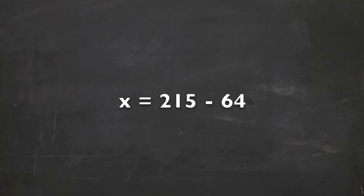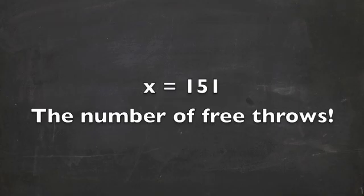After we have solved for y, we are allowed to plug it back into our previous equations. Solving for x, we plug in 215 minus 64, which gives us 151, the number of free throws.